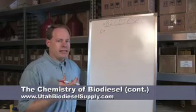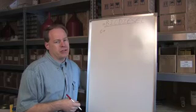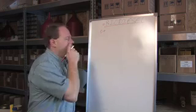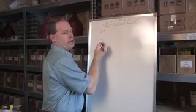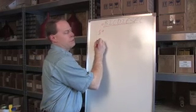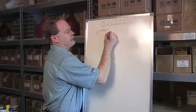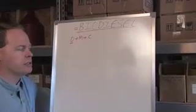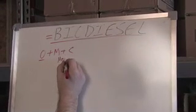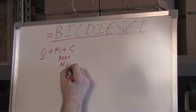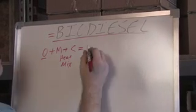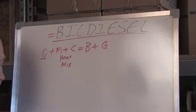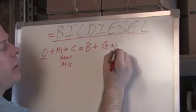We're going to talk about what actually happens when you try and make biodiesel, and then we're going to make a batch. To make biodiesel, we take oil, we add methanol, we add a catalyst — which is either potassium hydroxide or sodium hydroxide — we add some heat, we mix, and out the other end we're going to get biodiesel and glycerin. We also get a little bit of water.